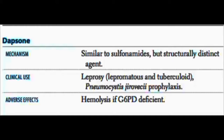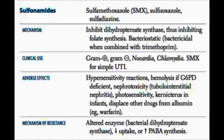The next anti-metabolite drugs are the sulfonamides — these include sulfamethoxazole, sulfisoxazole, and sulfadiazine. All of these inhibit dihydropteroate synthetase. These are the drug of choice for simple UTIs.